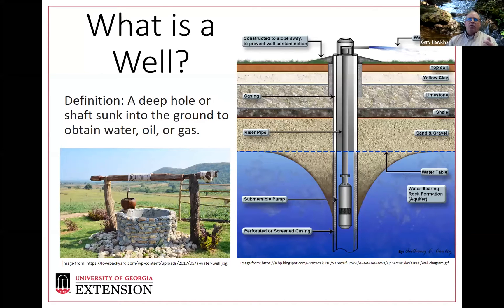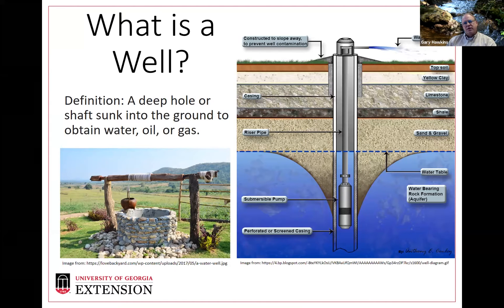When we start looking at well water, we first need to define what a well is. By definition, a well is a deep hole or shaft sunk into the ground to obtain water, gas, or oil — today we'll be talking about water. A lot of times we think of the well on the left with a bucket lowered down to get water. That's called a bored well, generally about three feet in diameter. The one we typically use for homeowners is on the right: a shaft either bored or drilled down into the aquifer itself.